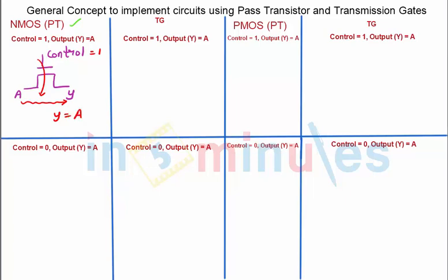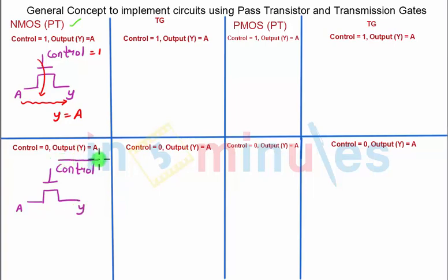Now, using the same NMOS pass transistor, I want my output to be equal to A when my control is equal to 0. We know an NMOS transistor will not turn on until a logic 1 is applied at its gate. So here is a trick: instead of giving the gate terminal the control signal directly, we give it control bar. When control is 0, control bar is 1, and when control bar is 1, A propagates to the output — so Y equals A.